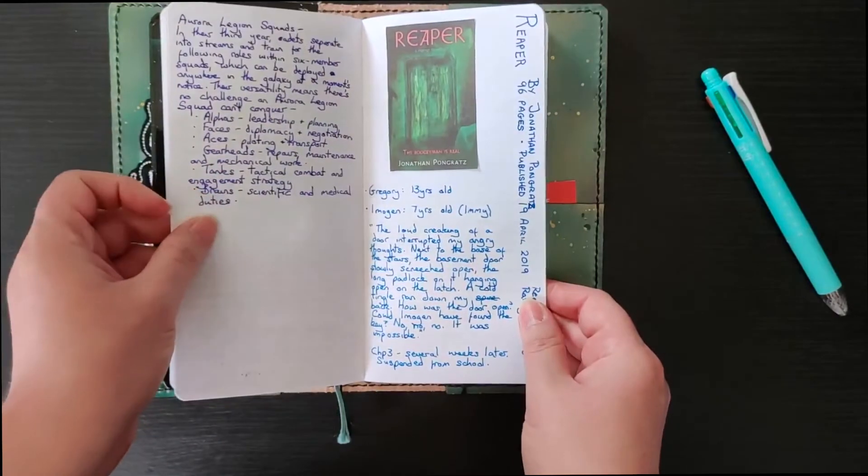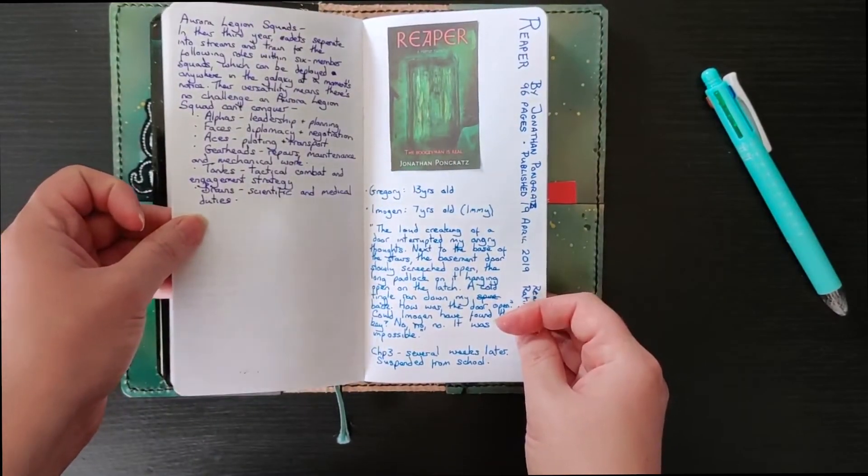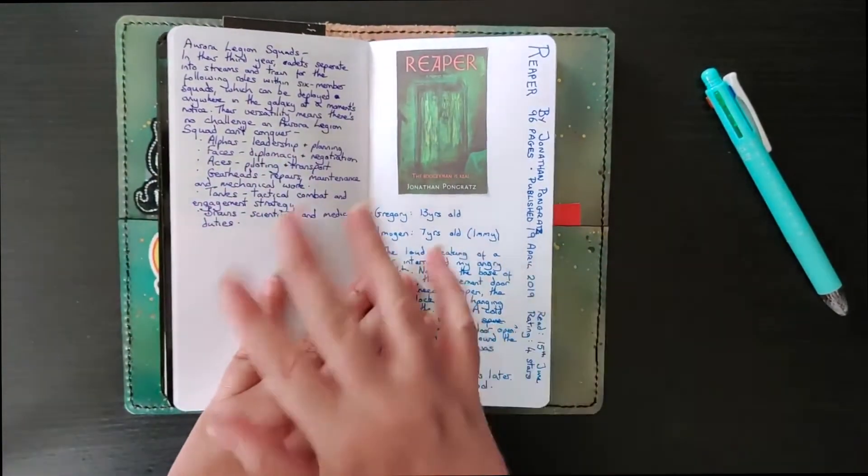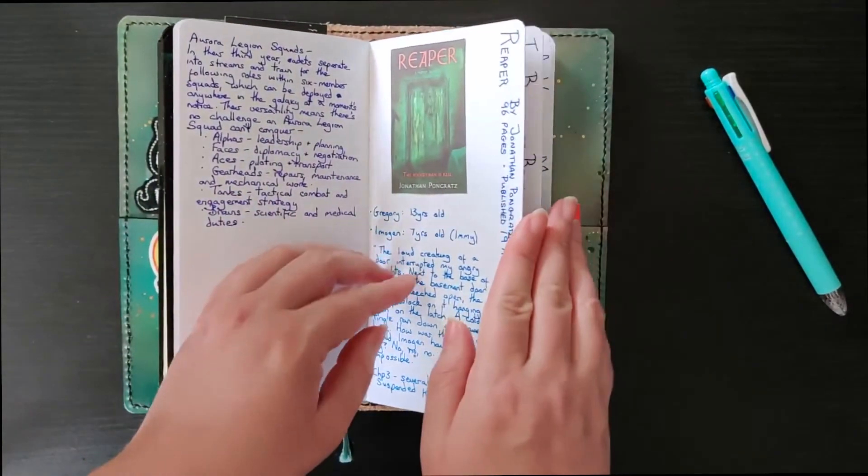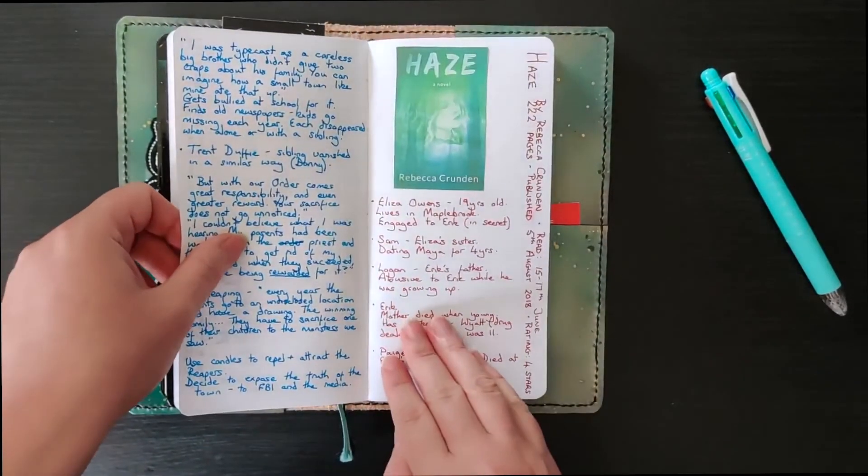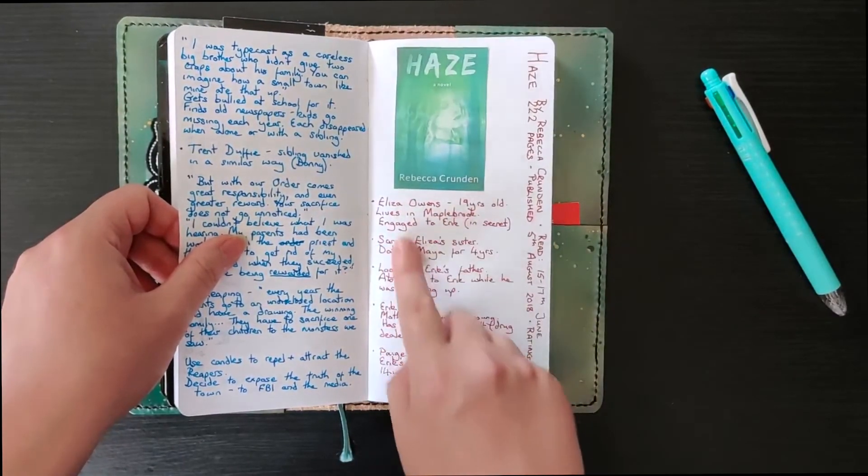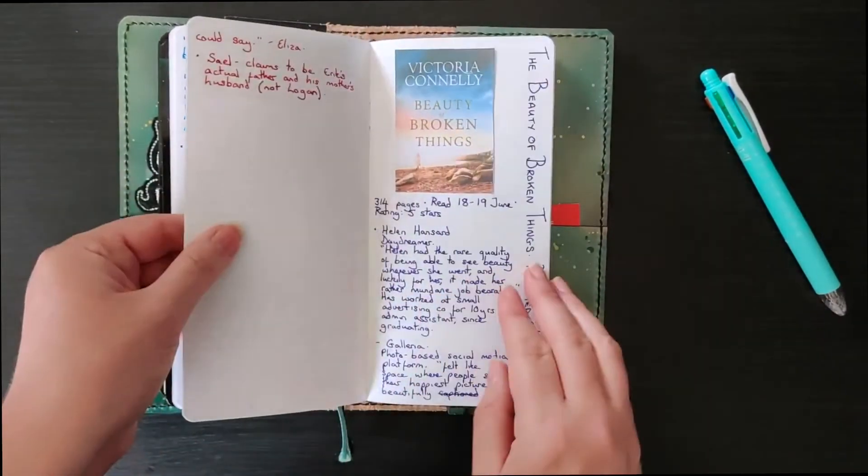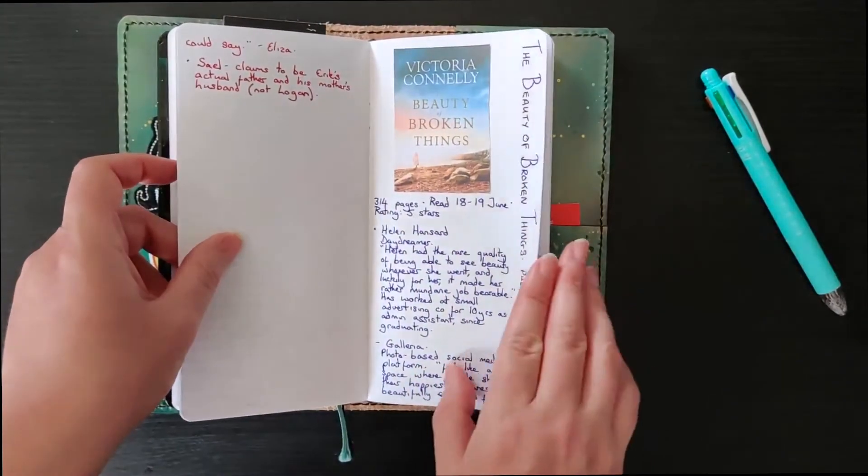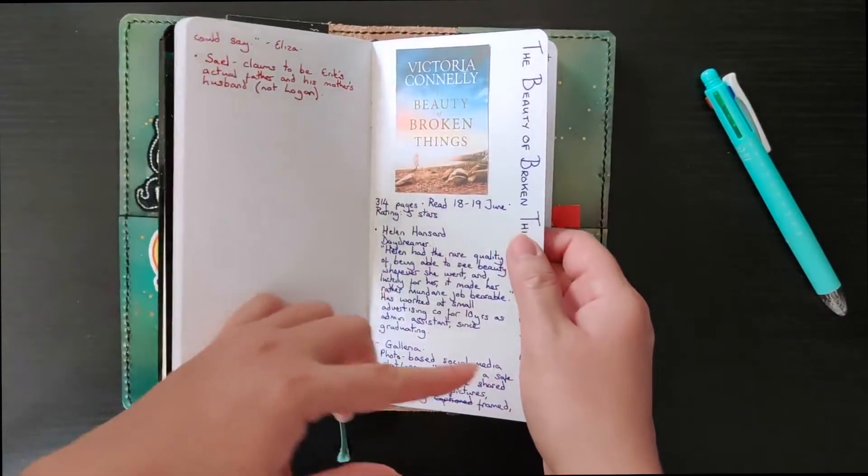So it's really simple I don't believe in making things too complicated as then I just won't keep up with it. And as you can see I tend to with characters try and keep their name and any brief details just on one line.